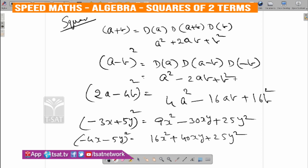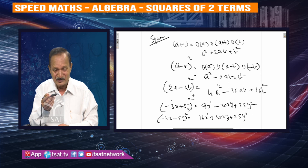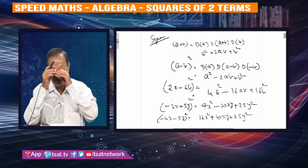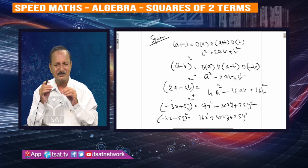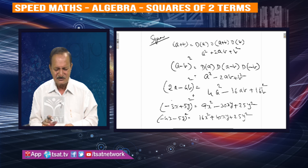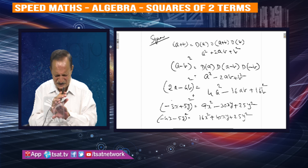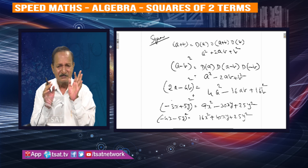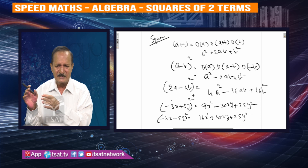Simply write the duplexes and you will get the answer. Then for 2-digit, 3-digit, 4-digit terms — simply we can do wonders by using this duplex. Write the duplexes right and you will get your answer. How many numbers — write the duplexes right.